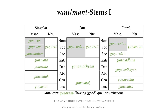In the dual, we first have a few strong forms: nominative, vocative, accusative gunavantau — that is, the ending au added to the strong stem gunavant, with no internal sandhi. In the instrumental, dative, ablative dual, we have the weak stem gunavat, but in front of the ending bhyam, which begins with a voiced consonant, the unvoiced t becomes voiced and changes into a d: gunavadbhyam. In the genitive and locative dual, we have the ending os, which begins with a vowel; in front of this vowel the t at the end of gunavat remains as it is: gunavatos.